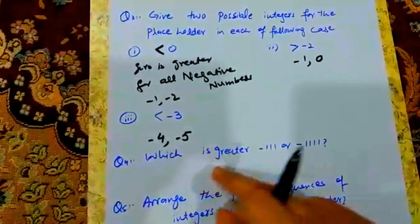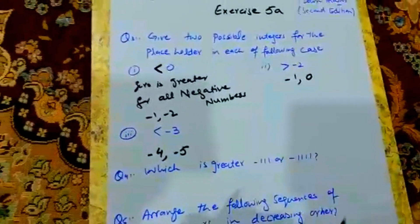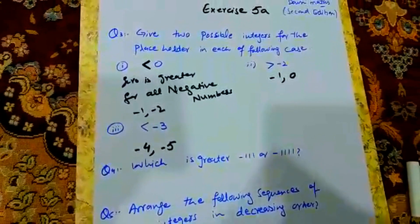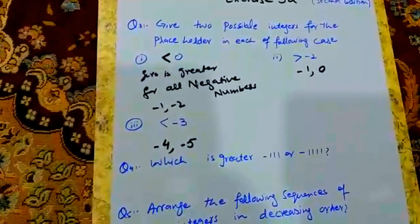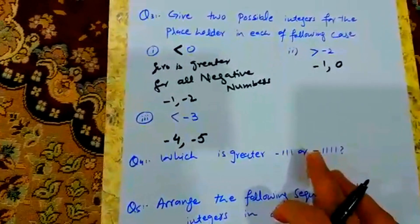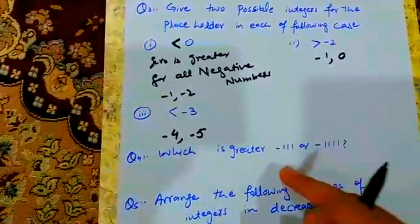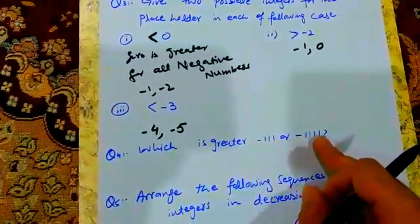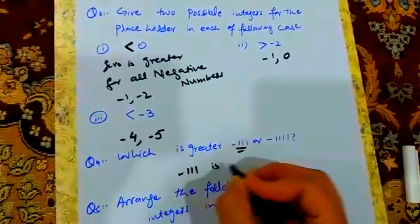Question 4: Which is greater — minus 111 or 1? The number may look bigger but if it is negative it will be smaller. You can see that 111 and 10011 — this term is bigger — so we can see that minus 111 is greater than the more negative value.